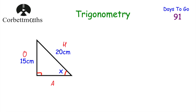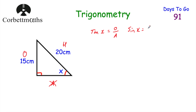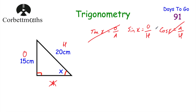Whenever we're doing trigonometry questions, we'll only ever be using two of those sides. In this question we're going to be using the opposite — that's 15 centimetres — and the hypotenuse — that's 20 centimetres — but we're not going to be using the adjacent, so we can cross that out. Now let's jot down our trigonometric ratios: tan equals opposite over adjacent, sine equals opposite over hypotenuse, cos equals adjacent over hypotenuse. Since we're not using the adjacent, we can cross off tan and cos. So in this question, we're going to be using sine.